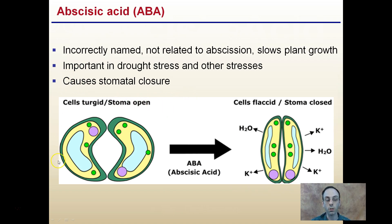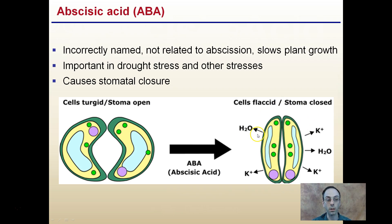We see our turgid guard cells here. If we add ABA, or abscisic acid, it can cause cells to become flaccid, particularly the guard cells, and the stomata to close. So when plants want to help decrease their water loss, abscisic acid can be a hormone that can be activated to help close the stomata of those plants.